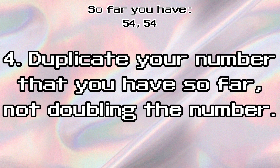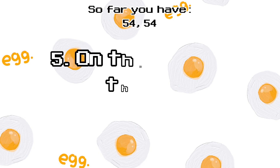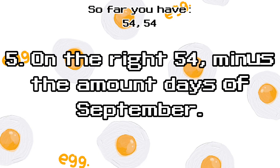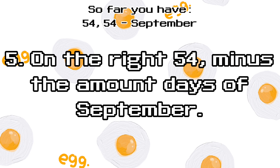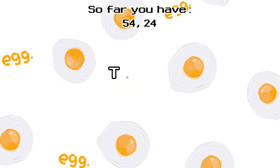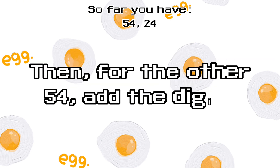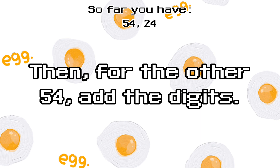Step 4: Double the number you have so far, giving you two 54s. Step 5: On the right, take 54 minus the number of days in September. Then, for the other 54 on the left, add the digits.